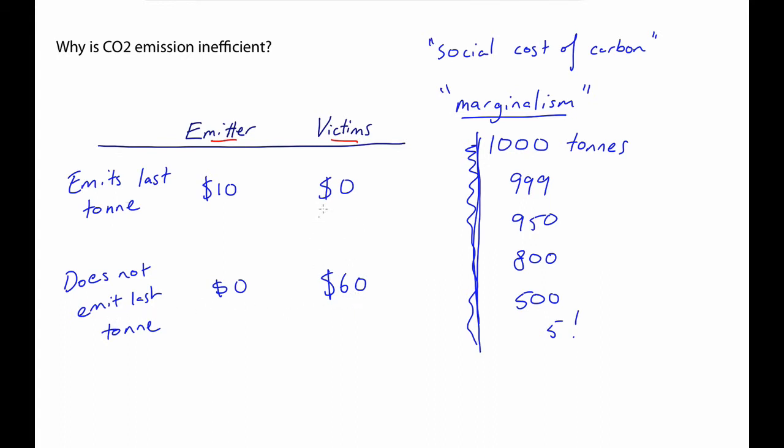Okay, we now have enough of a framework in place that we can ask in a serious way, is there a possible Pareto improvement here? To identify this, it's helpful to indulge in a somewhat unrealistic thought experiment and imagine that we could get the emitter together with the victims in a room to negotiate.